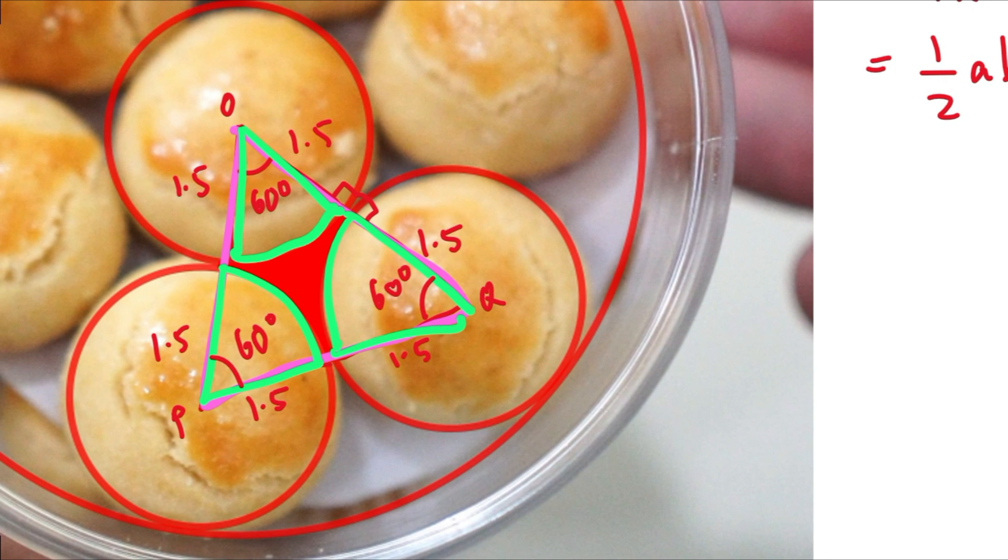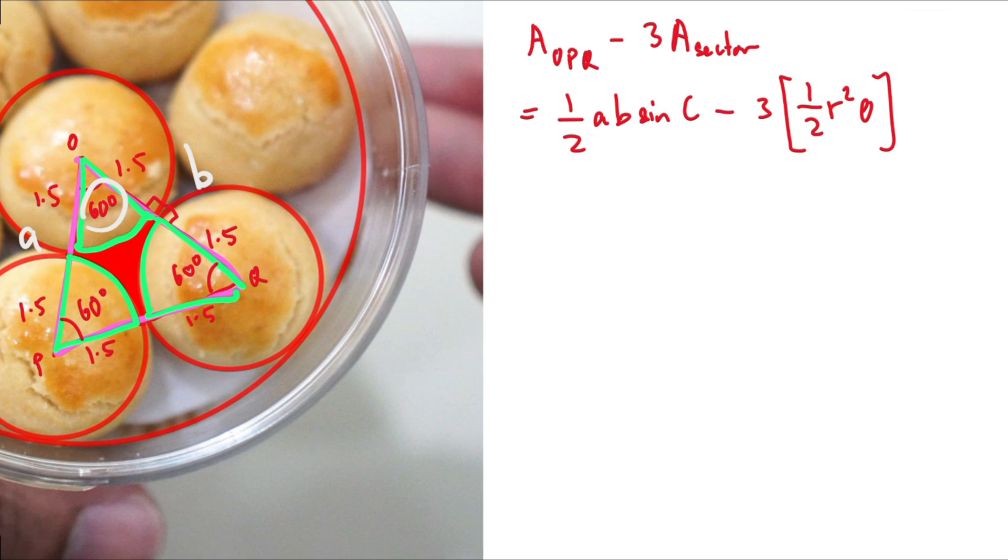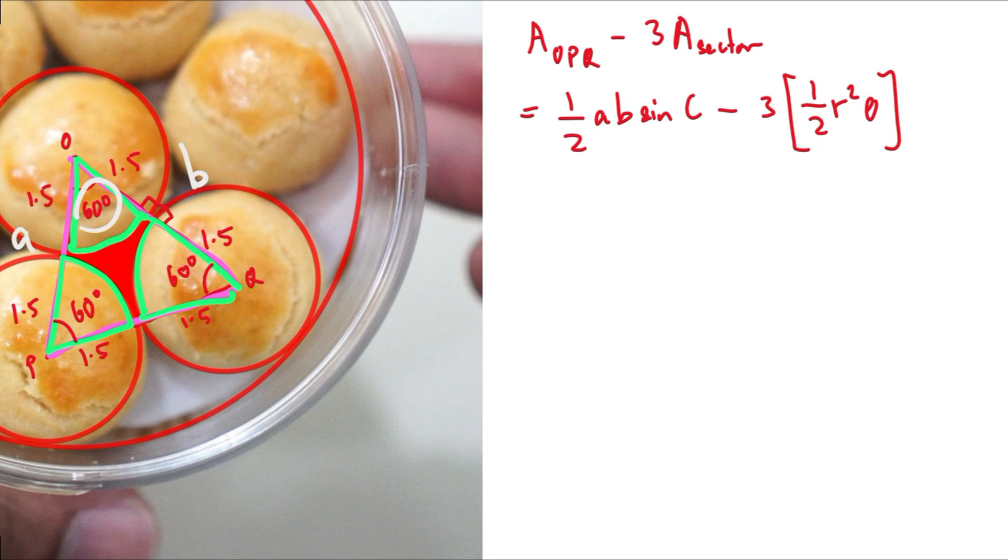So now all that's left to do is substitute. So since this is an equilateral triangle, it really doesn't matter which is A and B. Let's call this A, let's call this B, which means C will be 60 degrees. And so let's just substitute those values inside. We will get one over two times the side, the whole side here is 1.5 times two, which is three. So we have three times three times sine of 60 degrees.